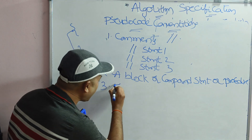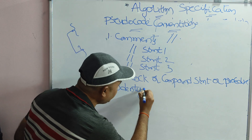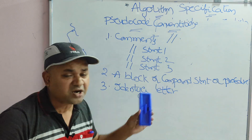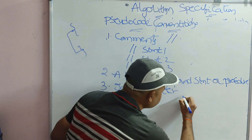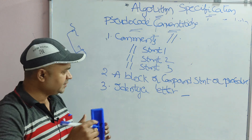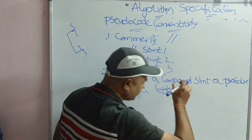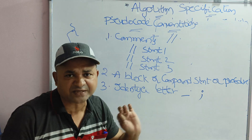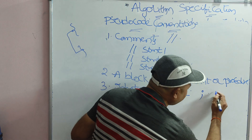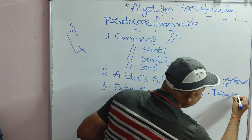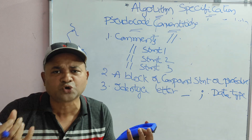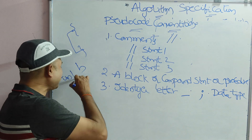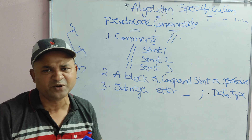Regarding identifiers: an identifier always begins with a letter — either capital or lowercase — but it cannot start with a digit. We can use an underscore symbol in an identifier. Every statement in an algorithm terminates with a semicolon. Data type and variable declaration are not necessary; if we want to use a variable, we can use it directly without declaring a data type.